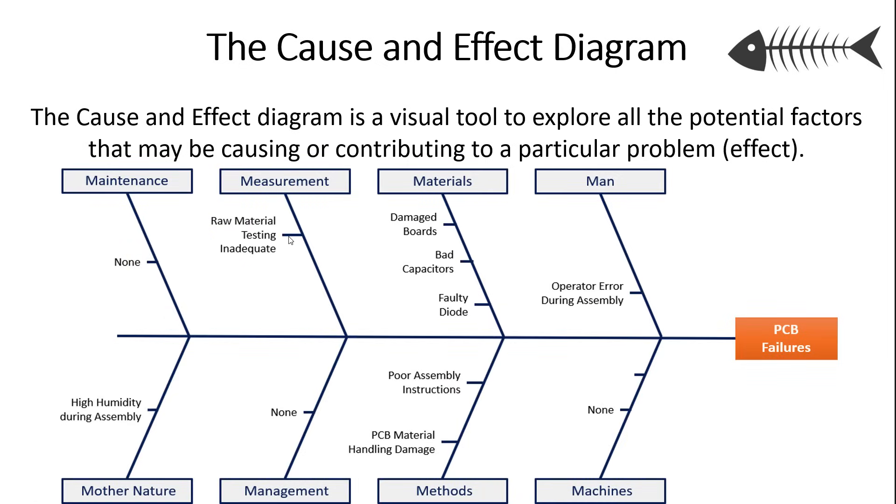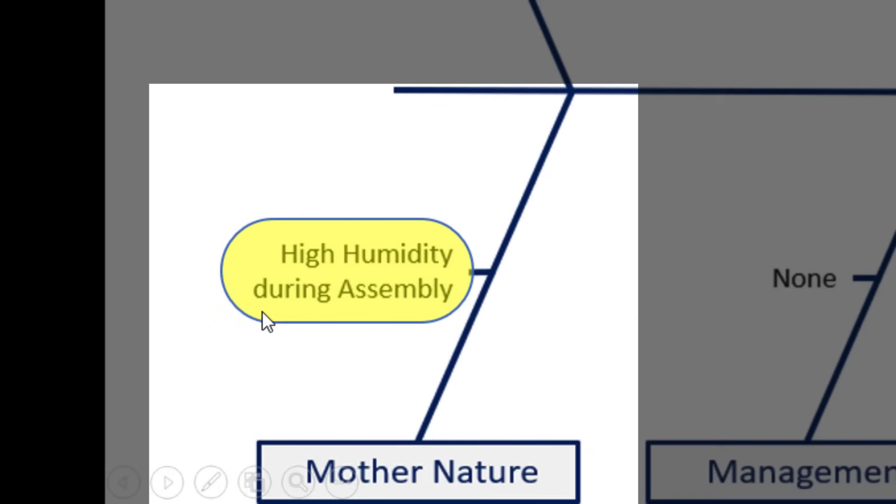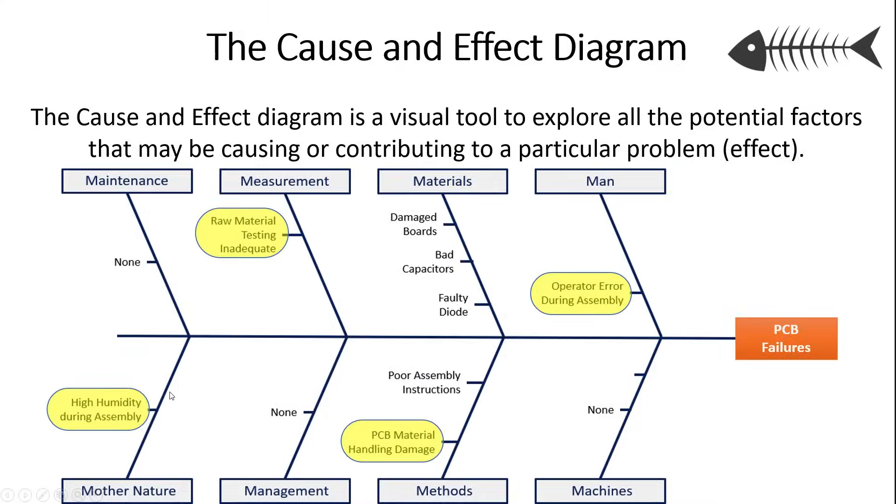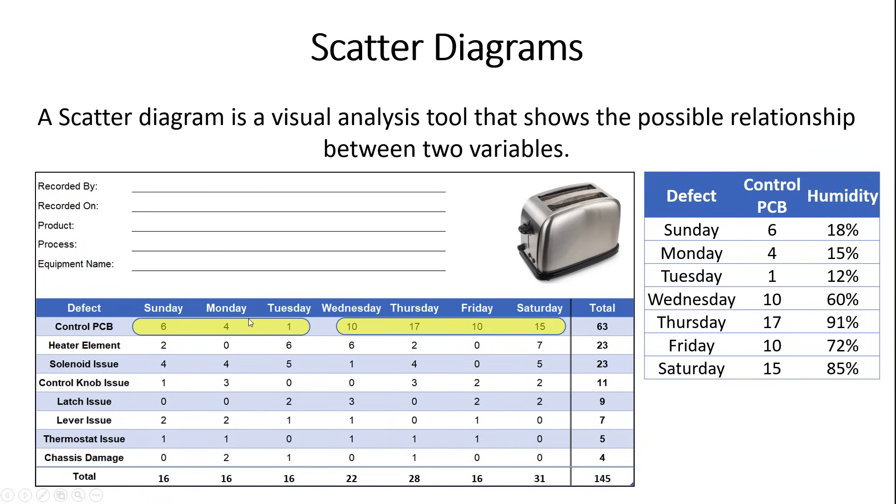As you have that team discussion and you go through the process, you can identify potential root causes and contributing factors to the problem you're trying to solve. We have to go back to that Pareto principle. We can't focus on everything. We have to talk about the most likely root causes. At the end of your cause and effect diagram, you might identify three or four issues that you need to study further. Now, I want to talk about this one, high humidity during assembly.